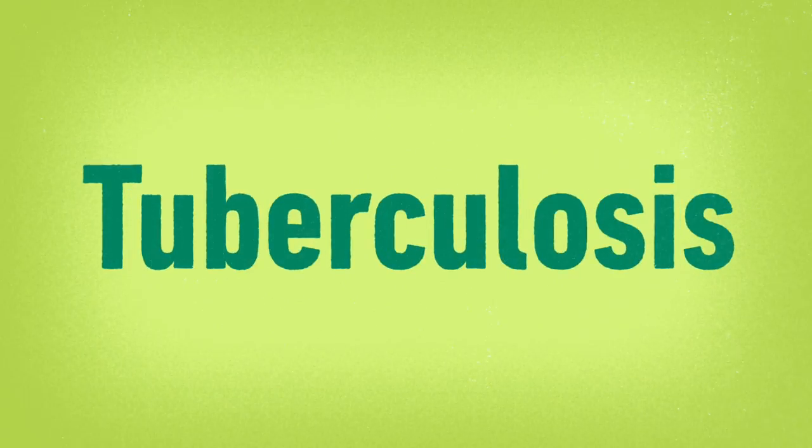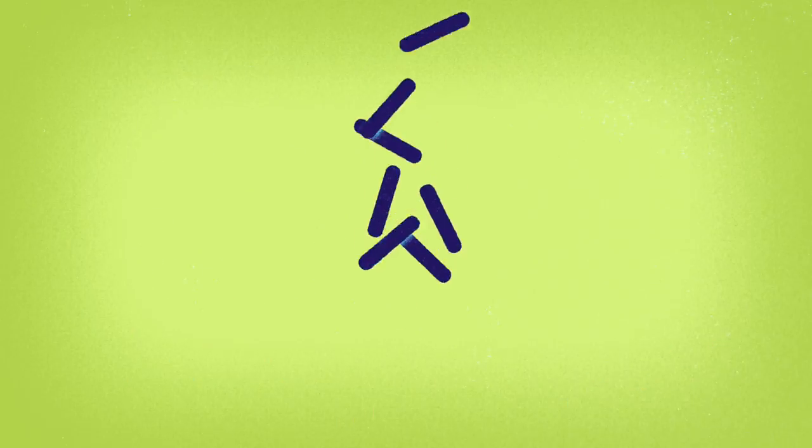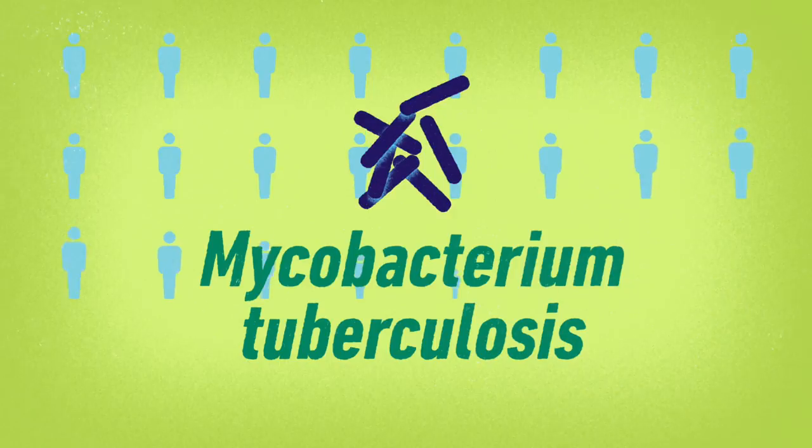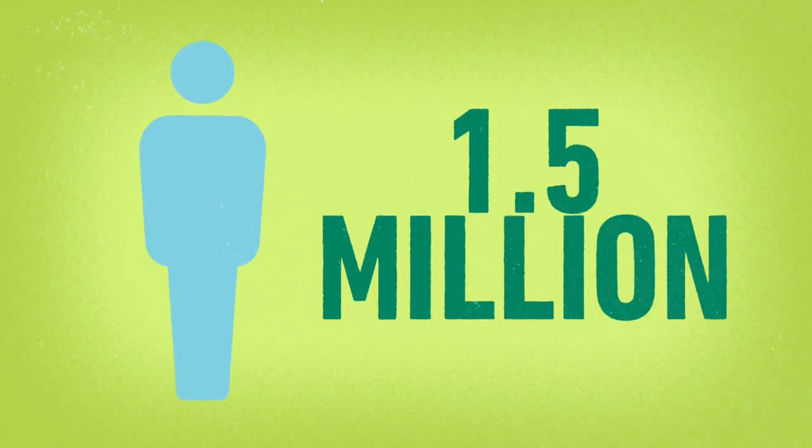Tuberculosis. A contagious infectious disease caused by the bacterium Mycobacterium tuberculosis. Today, TB is one of our deadliest diseases, killing over 1.5 million people a year. But how did it get to this stage? What's its history?